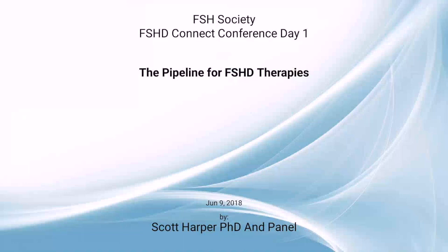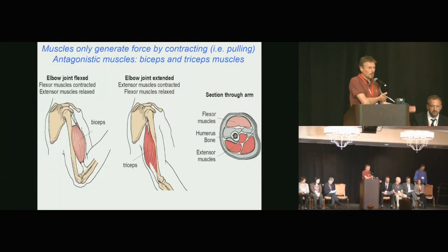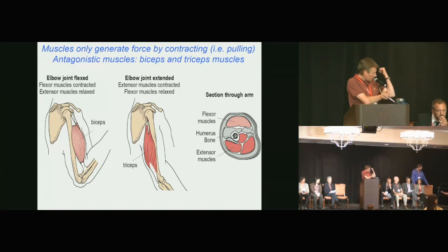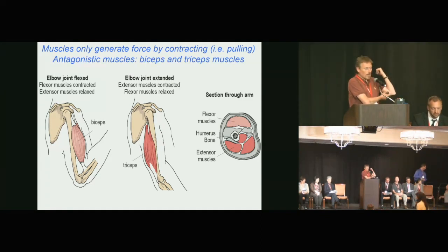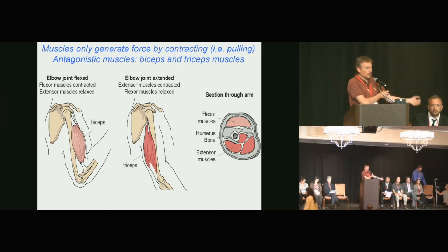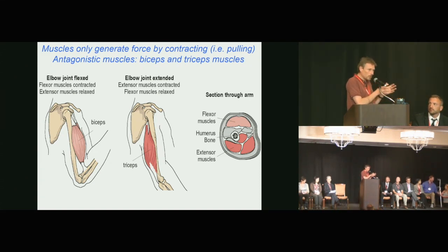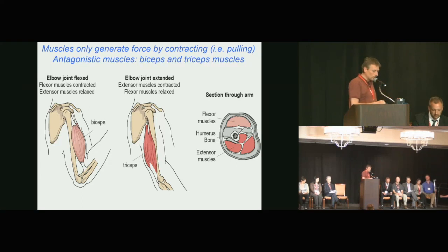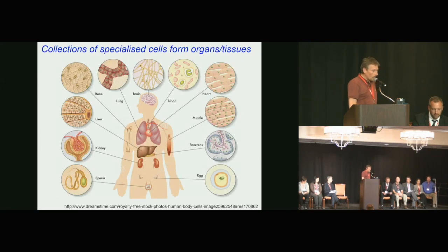If you think about your forearm, you have a muscle that contracts to bring your forearm up, but that pulls another muscle into position so that muscle can contract to bring your arm back down. Muscles are arranged so you only generate force by the muscles getting shorter.